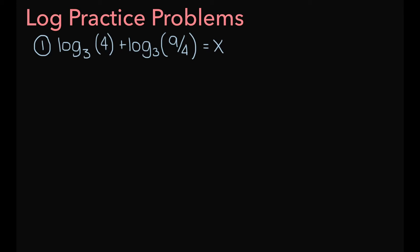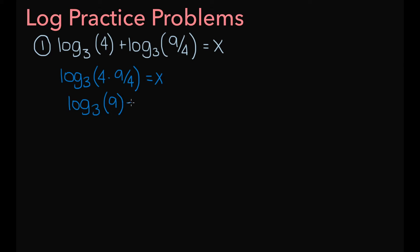Now let's do some log practice problems. Our first problem is the log base 3 of 4 plus the log base 3 of 9 fourths equals x, and we have to solve for x. First, we apply the product rule: the left side becomes the log base 3 of 4 times 9 over 4, equal to x. Multiplying 4 and 9 over 4 gives the log base 3 of 9 equals x. Rewriting in exponential form: 3 to the x equals 9, therefore x equals 2 because 3 squared equals 9.